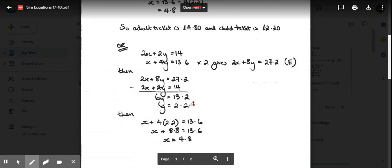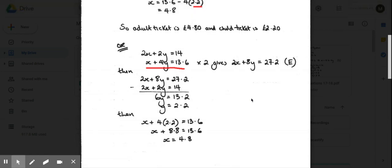Again, divide by 6, y is 2.2. Plug that back into one of the original equations. I've chosen to plug it back into that one, but it doesn't matter which one you use, either of the top two, and you get x is 4.8.